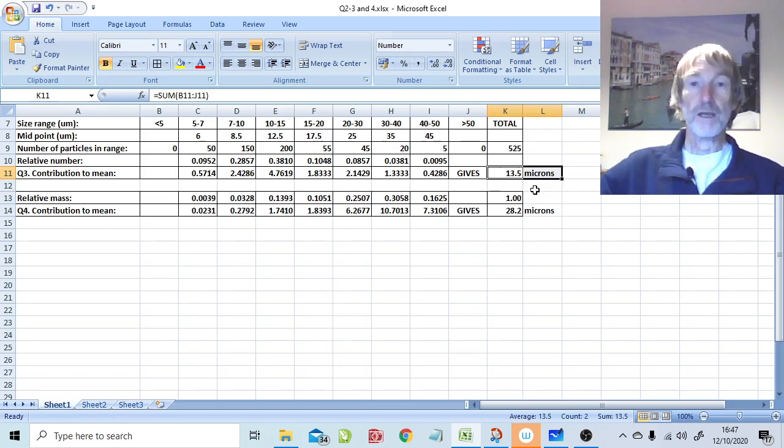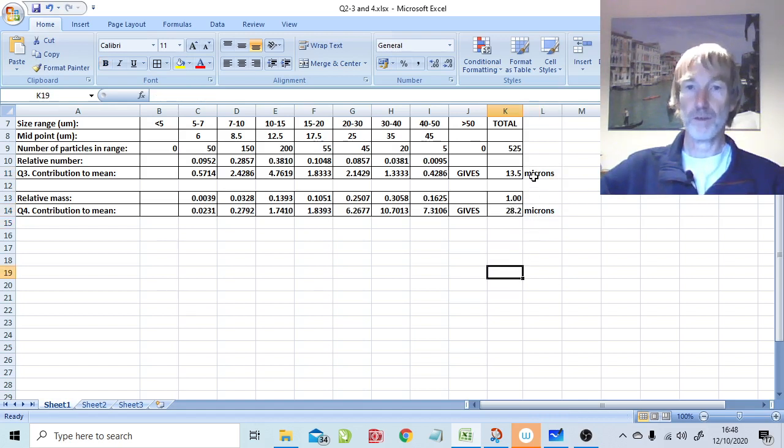But if you do the same thing in question four and calculate the relative mass and the mean by mass, it's actually now 28.2 microns. So the mean value by number is 13.5, mean value by mass is 28.2. Again, it's the same distribution, same material, it's just a different way of looking at it.